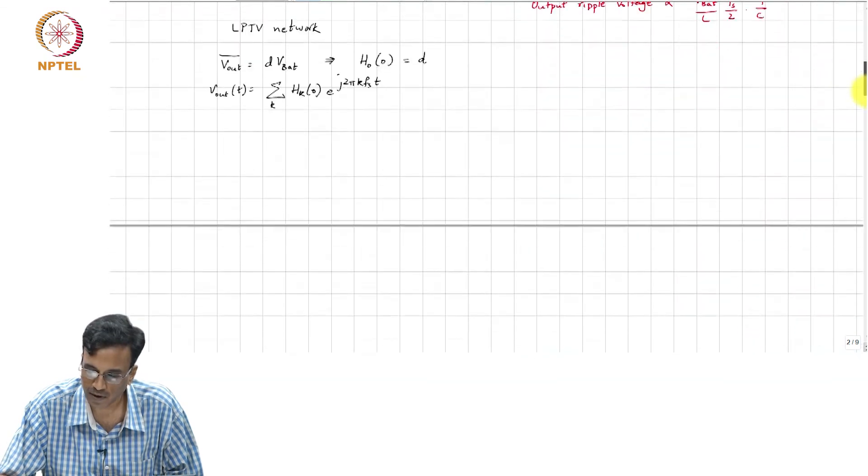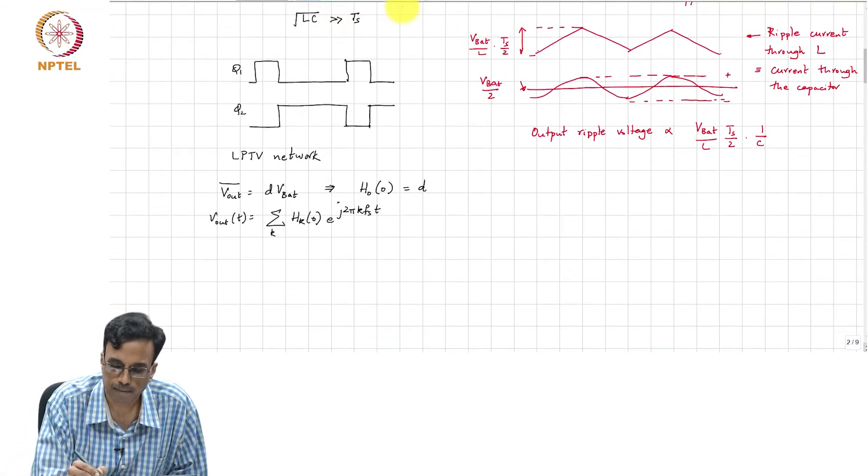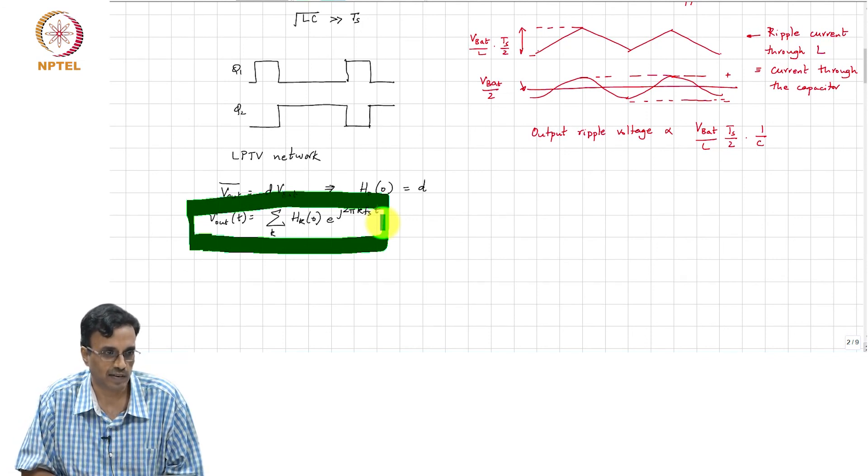And one way of doing that is to use multi-phasing, which is basically the N-path principle. Remember when we discussed this yesterday, over the last couple of classes, what does the N-path principle do? The output voltage, as we have seen here, is some H sub k of 0 times e to the j 2 pi k f_s times t. And it is the non-zero components of this expression, namely the harmonic transfer functions for k not equal to 0, that are actually responsible for the ripple at the output of the DC-DC converter.